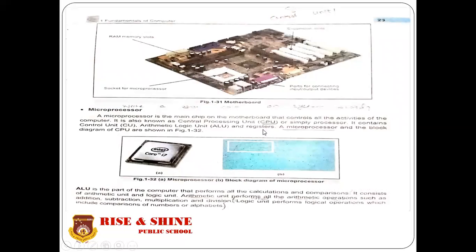The three main parts of the microprocessor are CU, ALU, and registers. The ALU is the part of the microprocessor that performs all arithmetic calculations and comparison operations. ALU is divided into two parts: the Arithmetic Unit (AU) and the Logic Unit (LU). The arithmetic unit performs all arithmetic operations such as addition, subtraction, multiplication, and division.